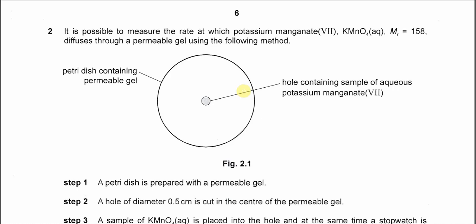Question 2. This question is a new question in Paper 5 and it's about the rate of reactions using the permeable gel and KMnO4.